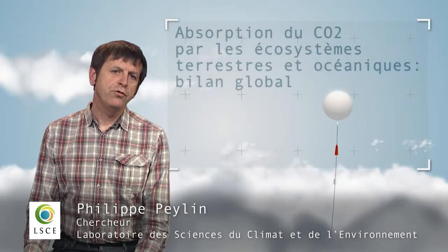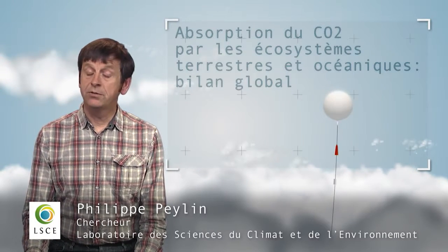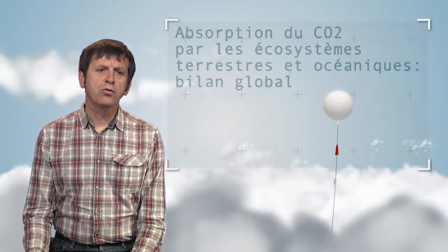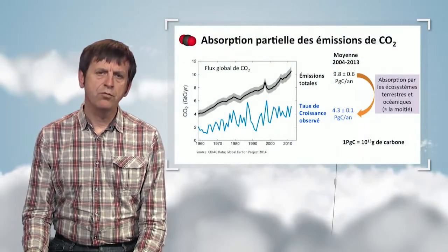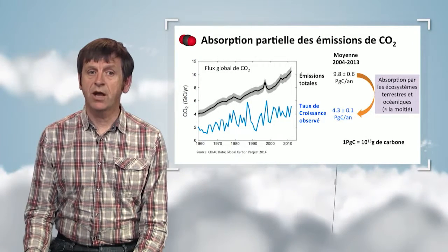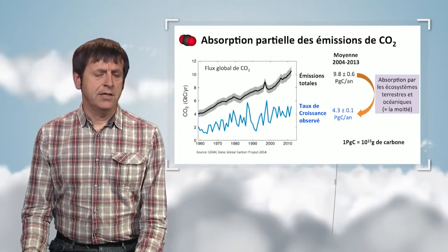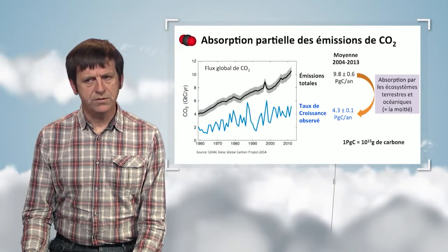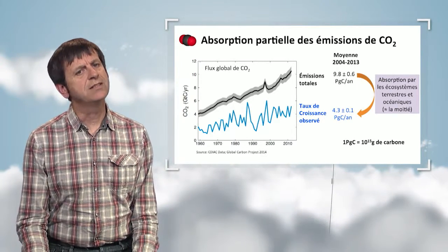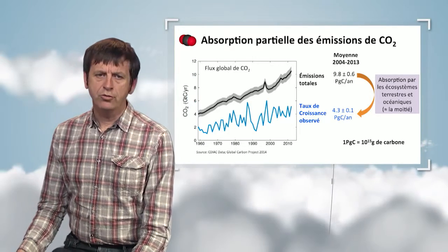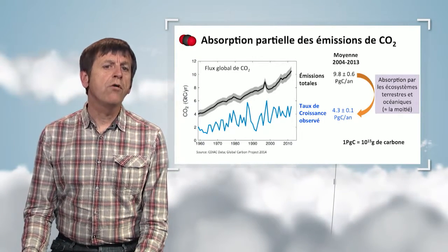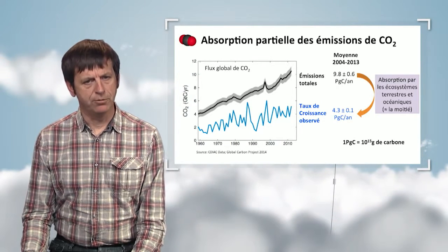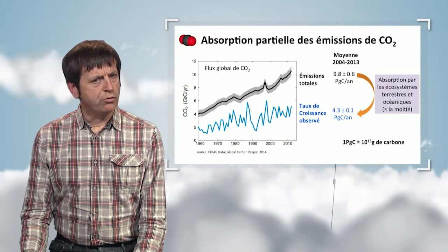In this video, I will explain what becomes of the anthropogenic emissions of CO2 released by man ever since the beginning of the industrial era, mid-18th century. The black curve on this graph shows the total quantity of carbon dioxide released into the atmosphere, which includes fossil emissions and partly emissions due to deforestation and land use change. For the last decade, we have released 10 billion tons of carbon per year, also referred to as 10 petagrams.